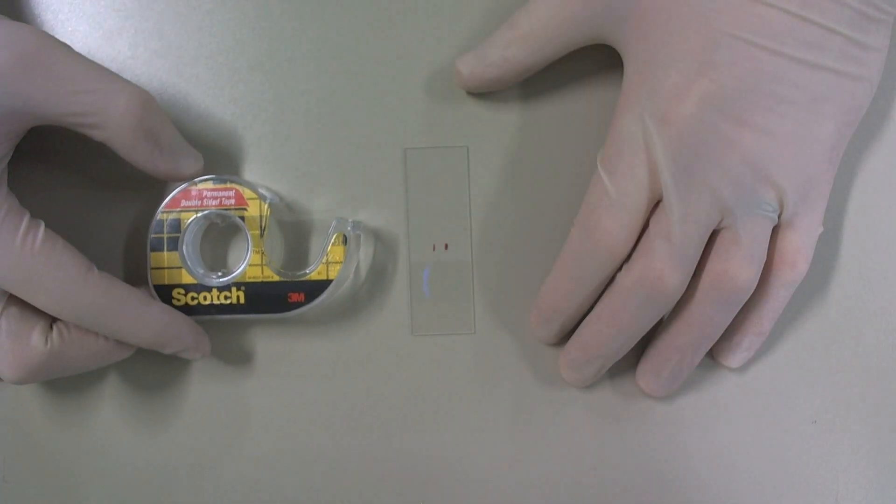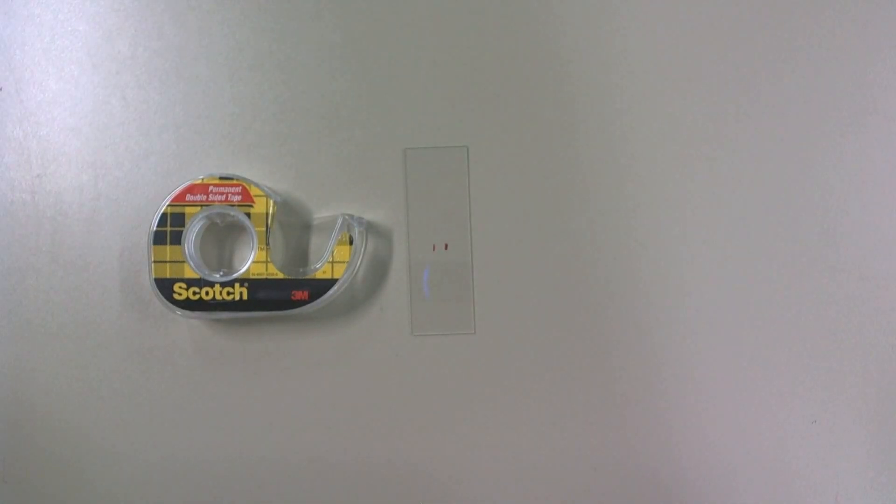After centering the slide between the hash marks, I next use permanent double stick tape made by Scotch to adhere the slip to the slide.